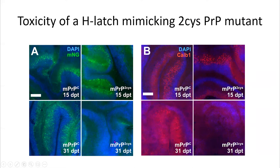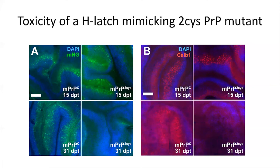To determine whether the loss was due to lost expression or lost cells, we looked at calbindin — an endogenous marker. Expressing the normal wild-type prion protein shows beautiful calbindin-expressing cells still present at 31 days, but expressing the two-cysteine mutant wipes out the calbindin-expressing cells. So, expression of the two-cysteine mutant is intrinsically toxic. However, this alone does not definitively prove that the H-latch is what drives the toxicity.